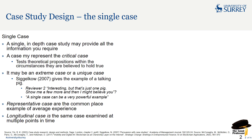Siglo — I put the paper up in the repository — gives the example of a talking pig. If you've got a talking pig, that's a pretty extreme case. The classic reviewer response is: 'Well, that's just interesting, but that's just one pig. Show me a few more talking pigs and I'll believe you that pigs can talk.' A single case can be very powerful, particularly if you've found a talking pig.